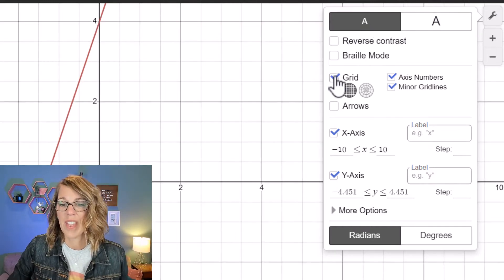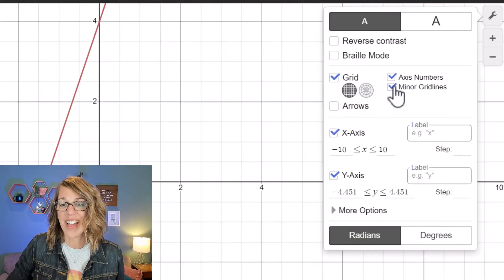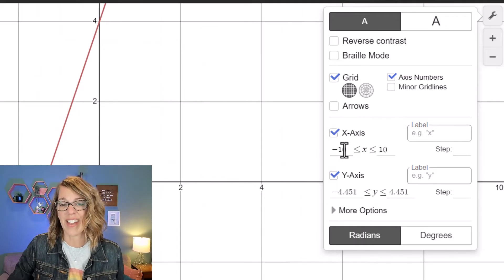So back to the lowercase a. You also have some great grid options. You can click on and off for those grid lines and you can also uncheck the minor grid lines. I'm going to leave that unchecked.